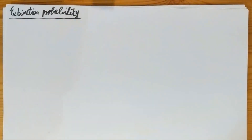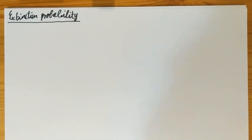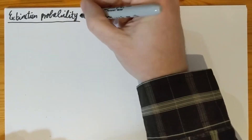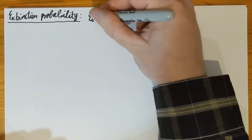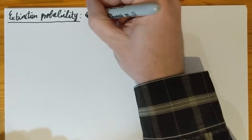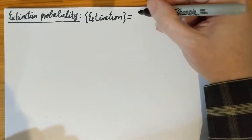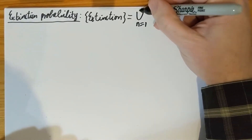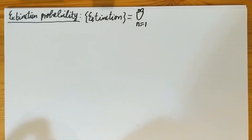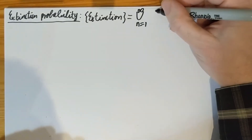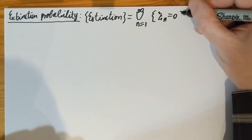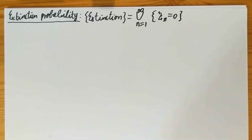We're going to look at this more closely and actually find the extinction probability in a somewhat closed form. What is the event of extinction itself? This event is that there's going to be a time when there are no amoeba left. The extinction event is the union over all n such that the total number of individuals Z_n at that time is zero — there is at least one n when the total number of individuals is zero.